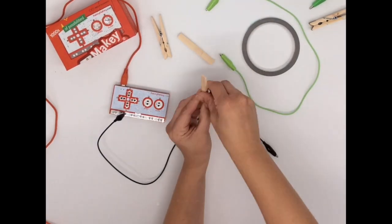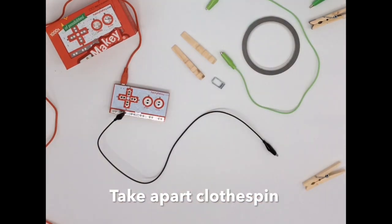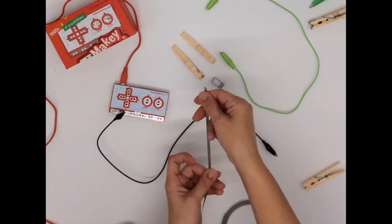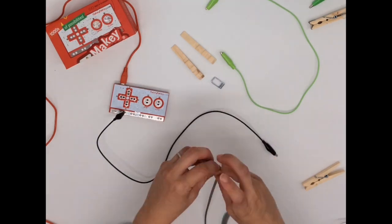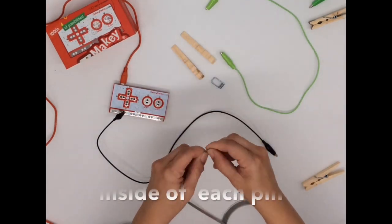So you take apart the clothespin and then you're going to take about three to four inches of conductive fabric tape to wrap around one leg of that wooden pin.